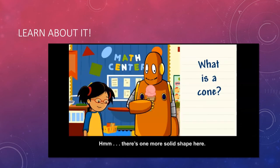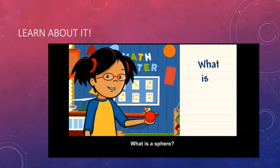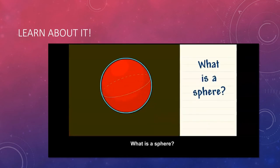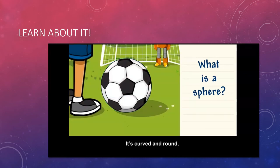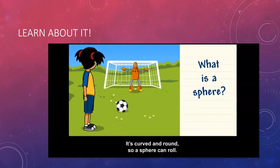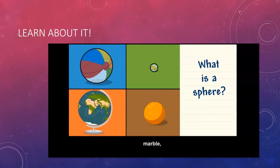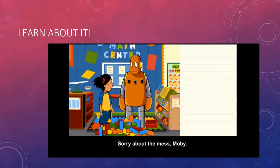There's one more solid shape here. What is a sphere? A sphere has no faces, no edges, and no vertices. It's curved and round so a sphere can roll. A ball, marble, globe, and an orange are all spheres.